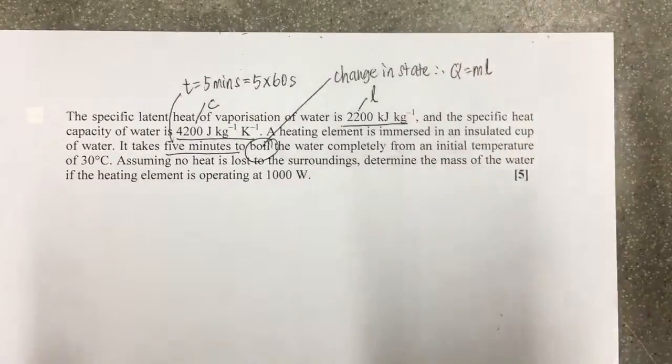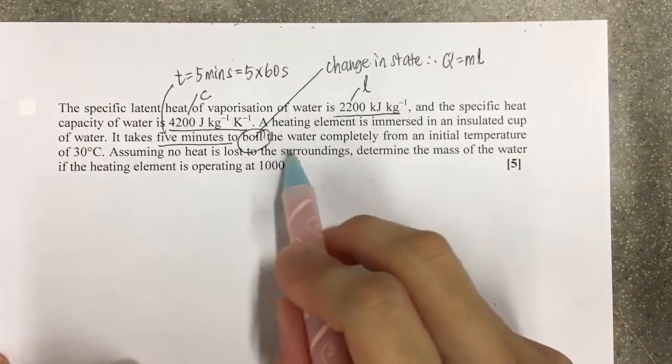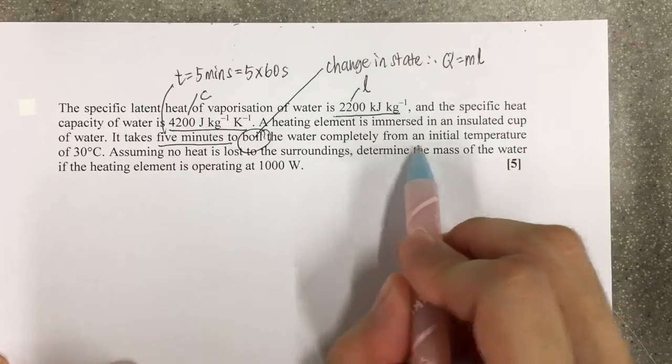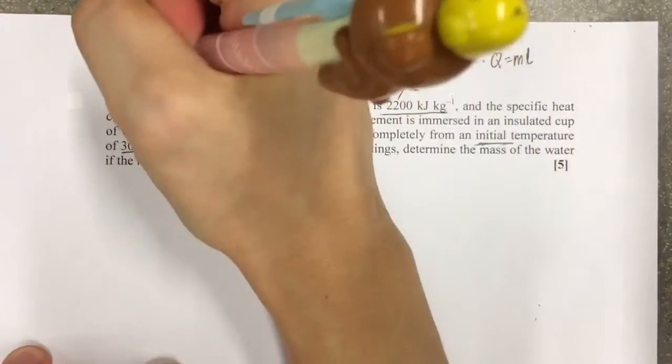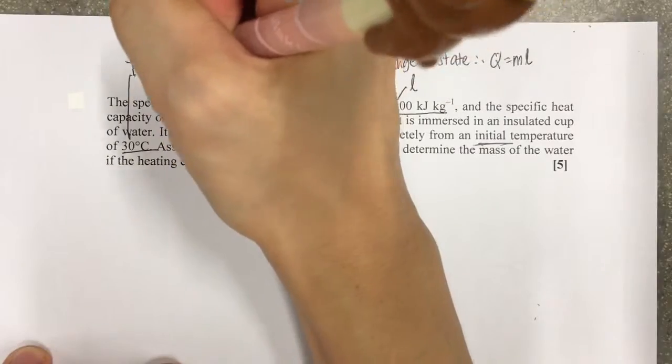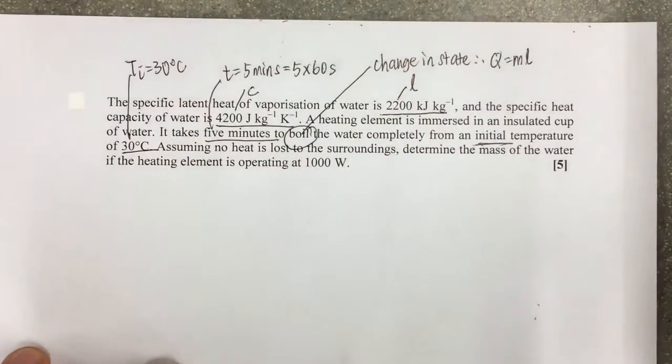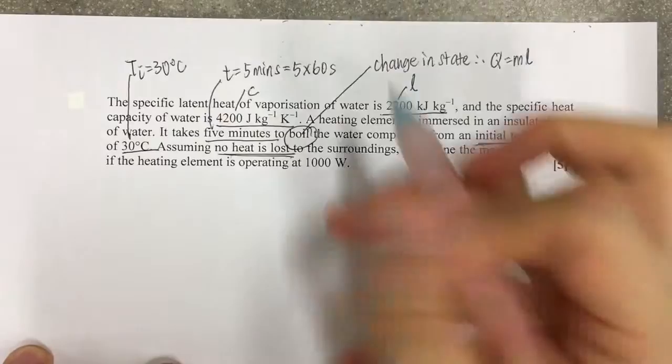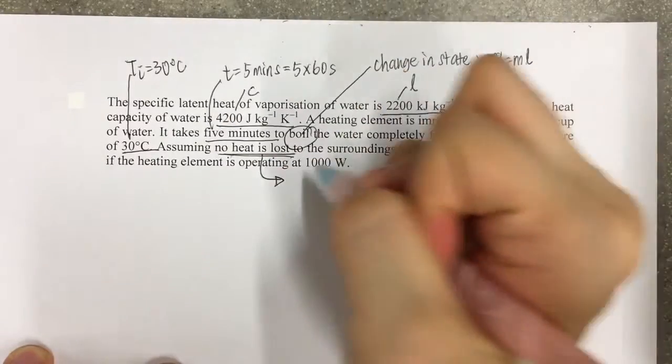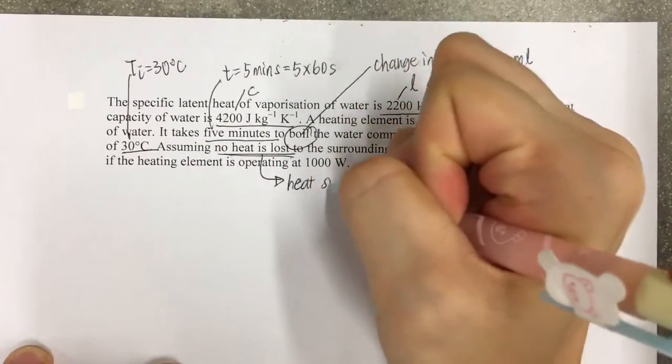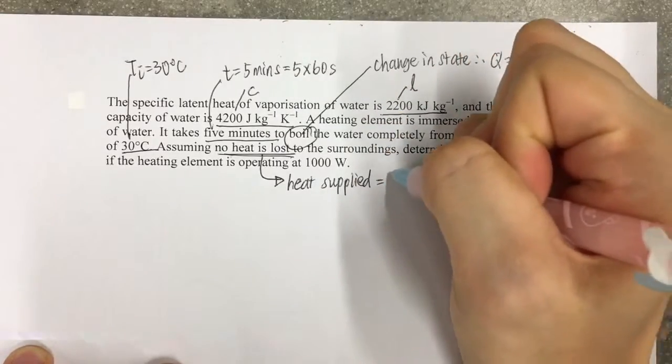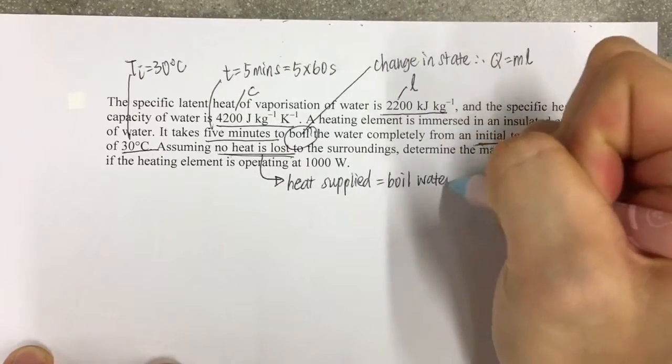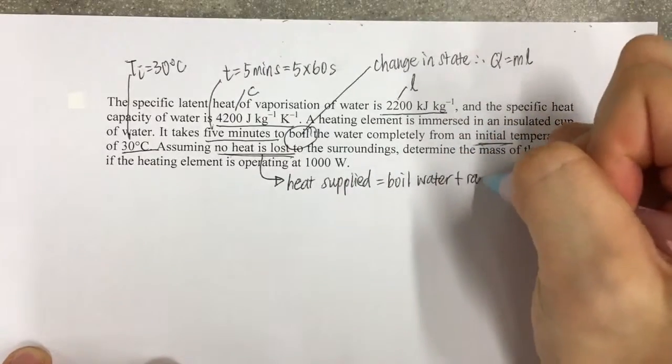To boil the water completely from an initial temperature of 30 degrees Celsius, so the initial temperature is 30 degrees Celsius. Assuming there's no heat loss—when there's no heat loss, that means the heat supplied will be used to boil the water and to raise its temperature.